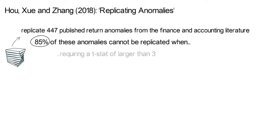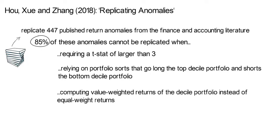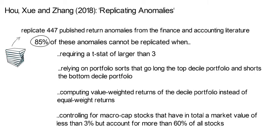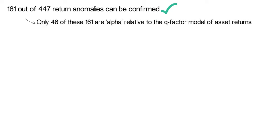To be precise, they cannot be replicated when requiring a t-statistic larger than 3, when relying on portfolio sorts that go long the top-decile and short the bottom-decile portfolio, when computing value-weighted rather than equal-weighted returns, and when controlling for micro-cap stocks that have a total market value of less than 3% but account for more than 60% of all stocks. The authors find that 161 out of 447 anomalies can be confirmed, but only 46 of these 161 are alpha relative to their Q-factor model of asset returns. So comparing 46 versus 447, you basically end up with roughly 10% alpha returns.